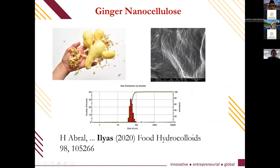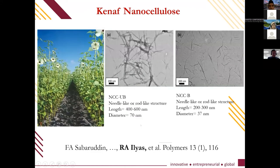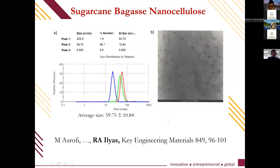Some of our work includes ginger nanocellulose published in Food Hydrocolloids 2020, and water hyacinth nanocellulose published in the Journal of Materials Research and Technology, with a diameter of 15 nanometers and a length of 147 nanometers. We also worked on kenaf nanocellulose, including un-bleached nanocellulose to examine the difference between nanocellulose with and without retained lignin content. We also worked on sugar palm bagasse nanocellulose.